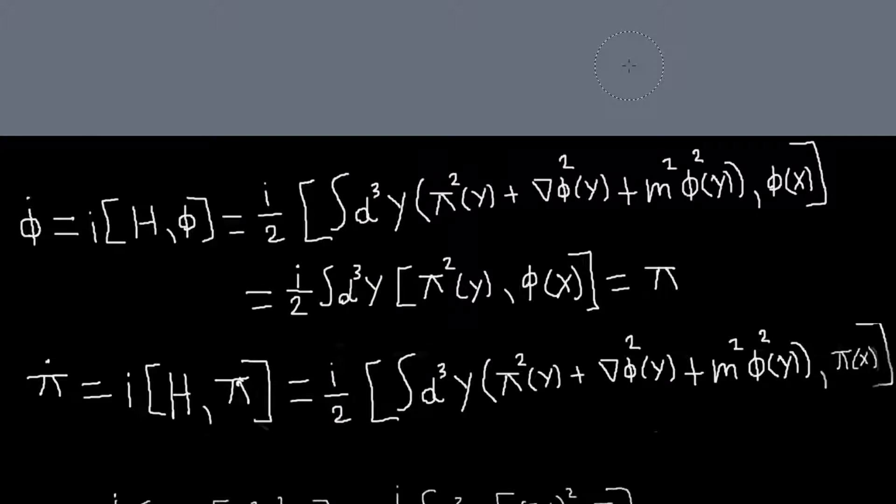Okay, in this problem we're just computing the Heisenberg equations of motion for our fields. So phi dot should just be i with the commutator H and phi, which is this. And then I can just notice that these two terms are functions of phi, so they will commute with this phi. So I can throw those away.